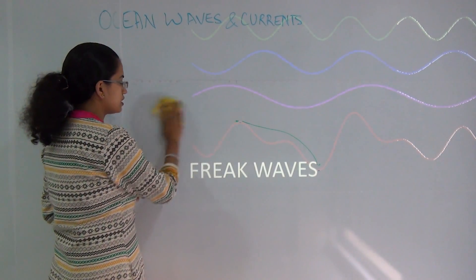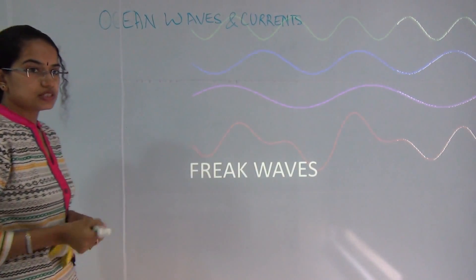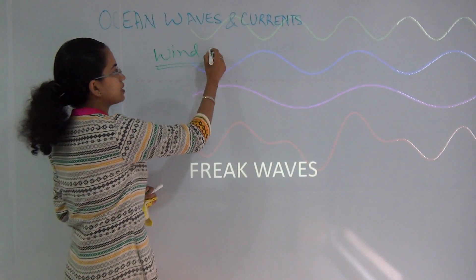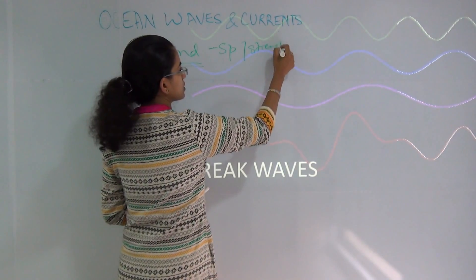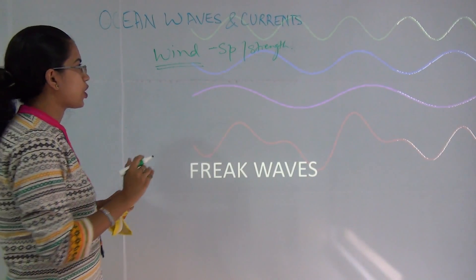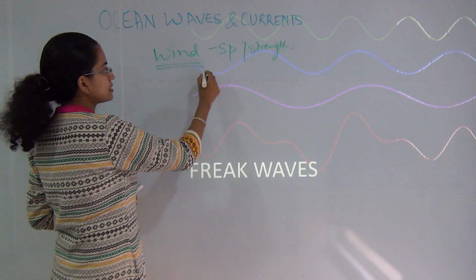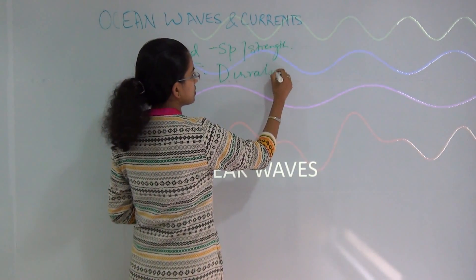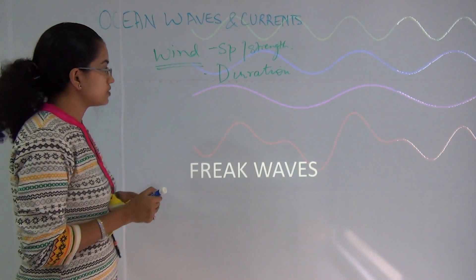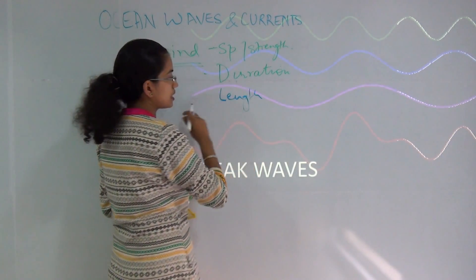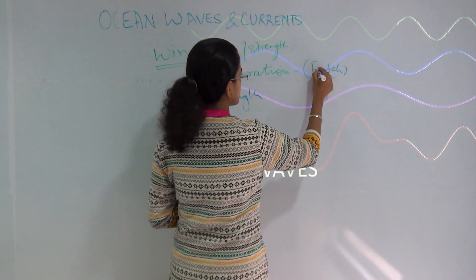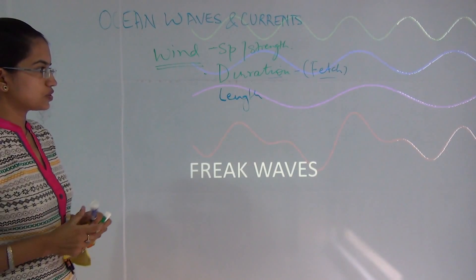There are various factors that affect waves. The first and most important is wind — the speed or strength of the wind is the primary factor. If the winds are strong, there would be bigger waves and stronger currents. Then there is duration — how long the wave has been. There are also other factors like the length of the wave. Duration is also known as pitch.